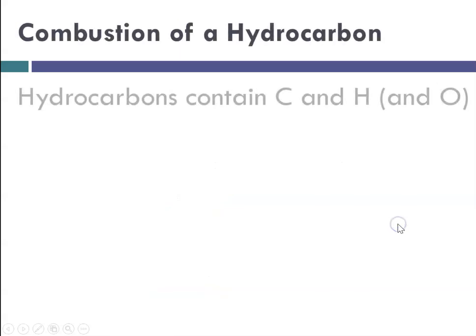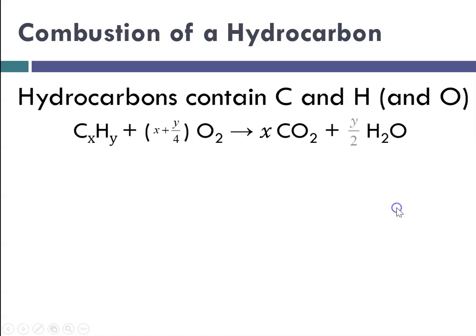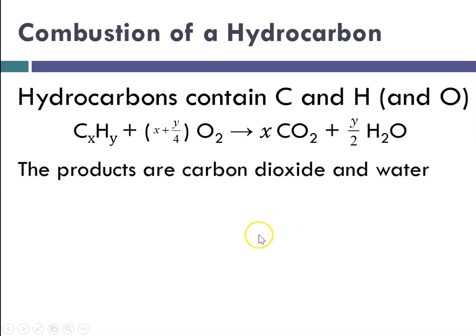So now look at the combustion of a hydrocarbon. Hydrocarbons contain carbon and hydrogen, and sometimes if you're looking at things like sucrose, it might contain oxygen as well. And so I'm going to give you this formula, and this formula makes it a little bit easier to balance because these can be difficult to balance. So where the subscript for C is X and the subscript for H is Y, then the coefficient for oxygen can be found by taking this X and this Y, and using this formula, X plus Y divided by 4 O2 yields X CO2. And again, this X comes from the subscript for carbon, and Y divided by 2 is the coefficient for water, where Y is again this subscript for hydrogen.